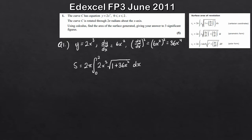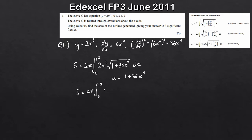Squaring dy/dx: (6x²)² = 36x⁴. So we need the integral of 2x³ × √(1 + 36x⁴) dx. Using linearity, we can pull the factor of 2 out front, giving S = 4π times the integral from 0 to 2 of x³ × (1 + 36x⁴)^(1/2) dx.